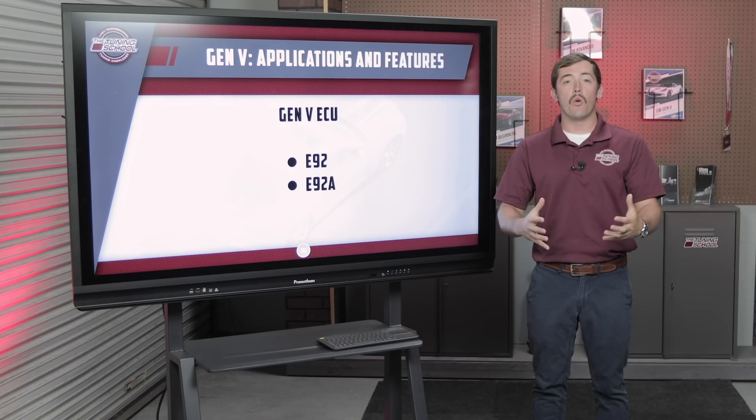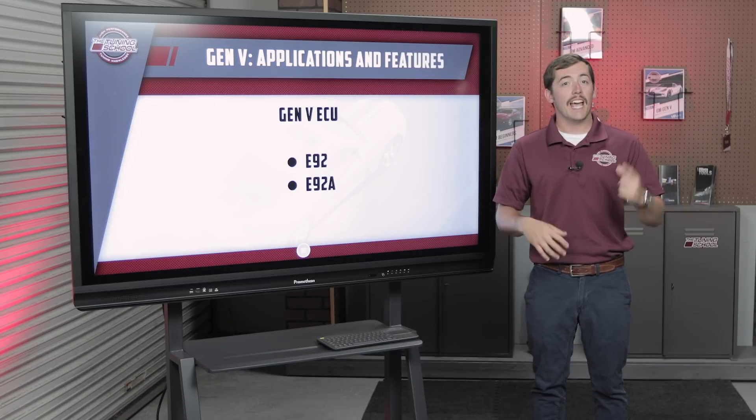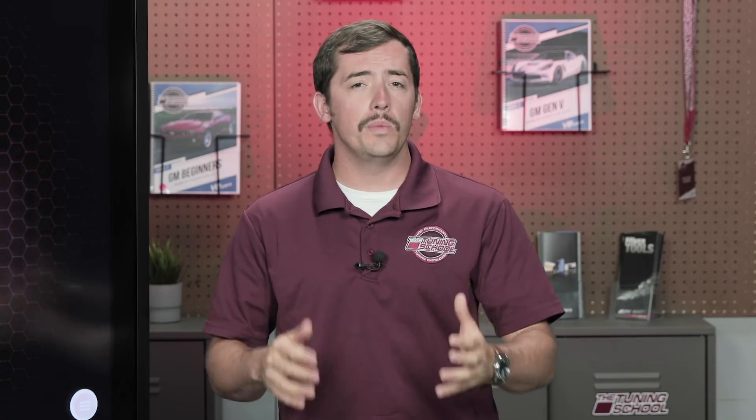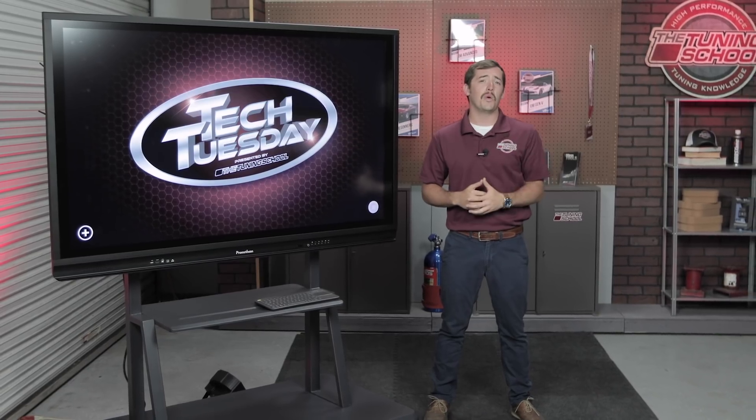So now you understand a little bit more about the type of computers GM uses. To recap: Gen 3 runs from 1997 to roughly 2006 and has a normal VE table. Gen 4 has a virtual VE table and runs from about 2006 to roughly 2015. Gen 5 takes over with torque-based systems in 2015, controlling the LT1 and LT4 motors. If you want to learn more about tuning these specific applications, check out our website for course material. I hope you enjoyed this video and can take some information away that helps you better understand your car. For more high-performance tuning knowledge, subscribe to our YouTube channel, follow us on social media, and as always, stay tuned.